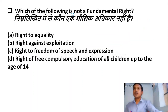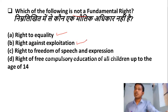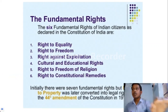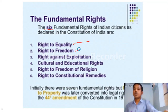Which of the following is not a fundamental right? Option A: Right to equality — this is a fundamental right. Option B: Right against exploitation — also a fundamental right. Option C: Right to freedom of speech and expression — also a fundamental right. Option D: Right of pre-compulsory education for all children up to the age of 14 — this is not a fundamental right. So Option D is the correct answer. Please remember all six fundamental rights: Right to Equality, Right to Freedom, Right against Exploitation, Cultural and Educational Rights, Right to Freedom of Religion, and Right to Constitutional Remedies.